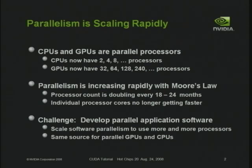The key thing about parallelism is that it motivated CUDA. The main motivation was that parallelism isn't just happening — it's changing rapidly. In other words, the number of processors we have to deal with is increasing dramatically, doubling about every 18 to 24 months along with Moore's law.